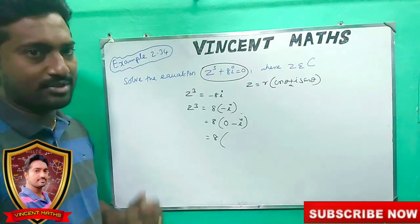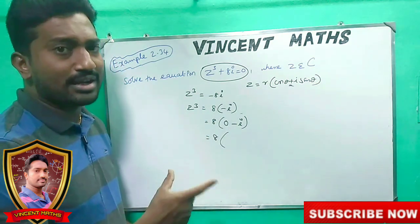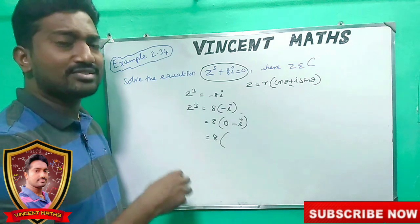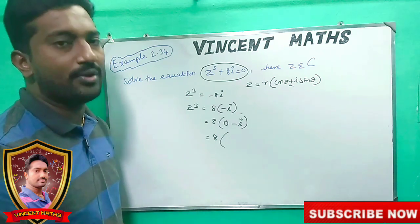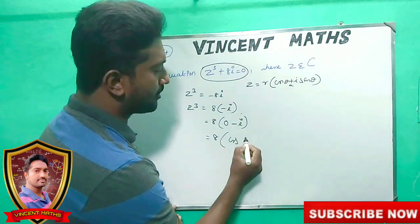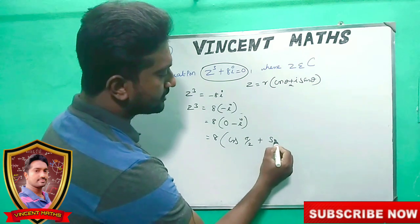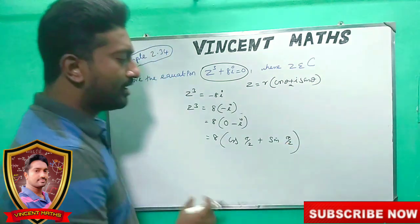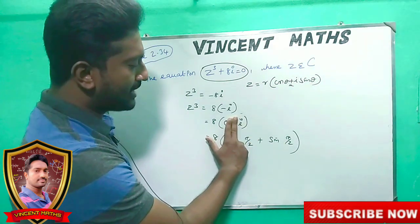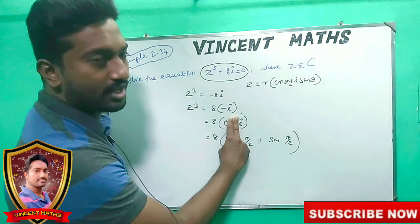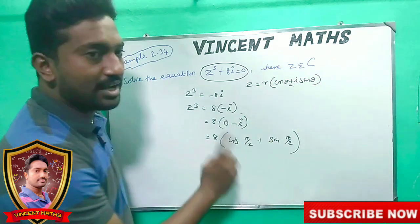The real part is 0. Cos θ = 0, which means θ = π/2. Cos(π/2) = 0 — that checks out. Sin(π/2) = 1. But we need minus, so this will be minus.